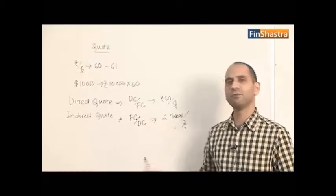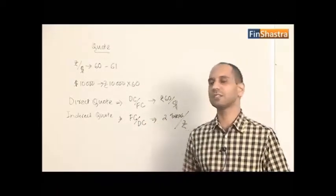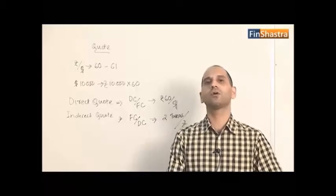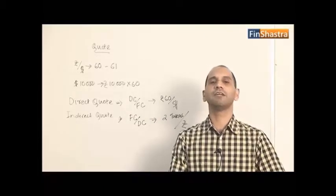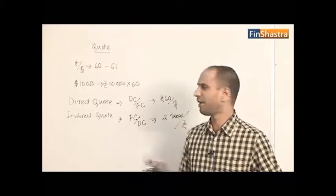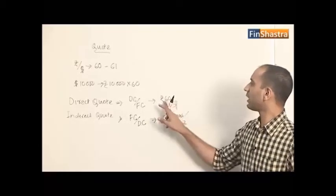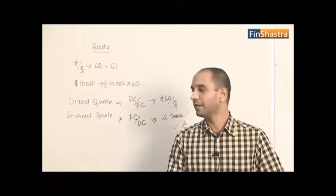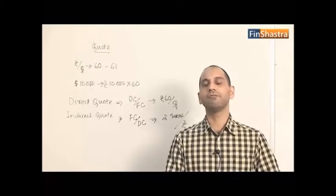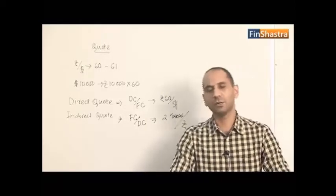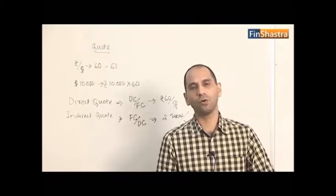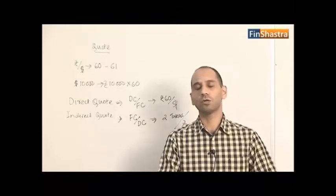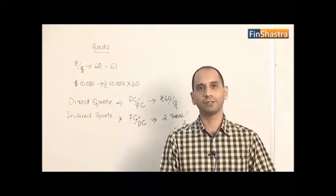There's no particular convention the forex markets strictly follow — some currencies are quoted using direct quotes, others using indirect quotes. It's more a matter of convention and convenience. Whether I quote rupees 60 per dollar or 1/60 dollar per rupee, it doesn't make any difference. In exams, be prepared to face both direct and indirect quotes; the final outcome is not going to be any different.